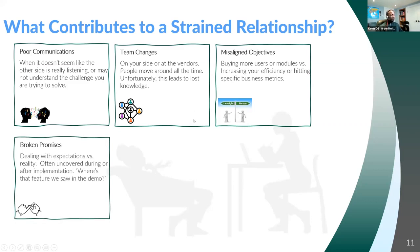Broken promises always strain a relationship. Dealing with expectations versus reality is often uncovered during or after implementation. We saw the demos, bought the software, signed the contract, and now wait — we saw some features in the demo or a PowerPoint presentation, and they're not showing up in the actual software. Or we have to get really creative and tweak things to make something work that we thought was going to be pretty turnkey when we first got the solution. Things like that can really strain a relationship.